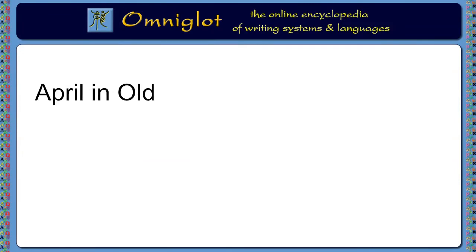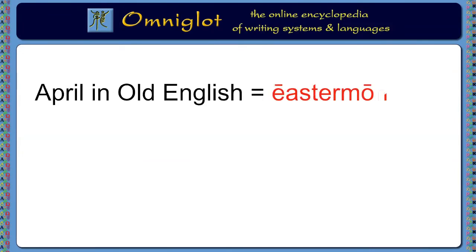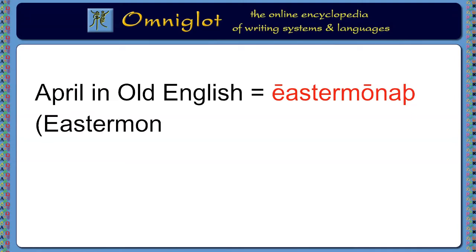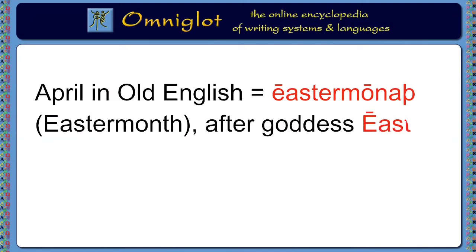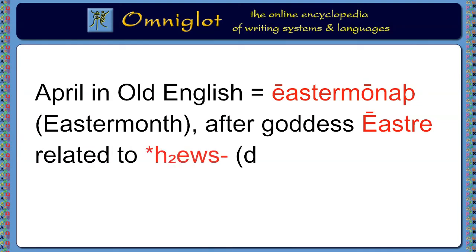The original Old English word for April was Eestamonath, or Eastermon, named after the goddess Esther, whose name is related to the Dawn, or East, from the Proto-Indo-European word Heos.